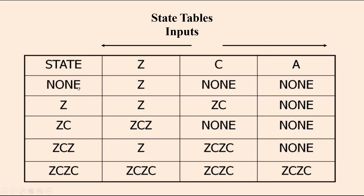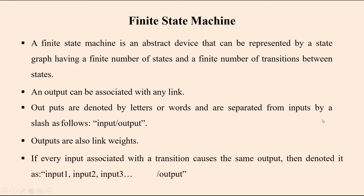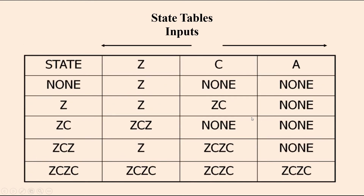Let's see an example of how a state graph is represented as a state table. The states are none, Z, ZC, ZC-Z, and ZC-ZC. Initially none is detected; then Z is detected; next ZC is detected; then ZC-Z is detected; and finally ZC-ZC is detected. In the sequence: from none to Z, Z to ZC, ZC to ZC-Z, ZC-Z to ZC-ZC. Like that, we have represented the various states in the form of a state table.